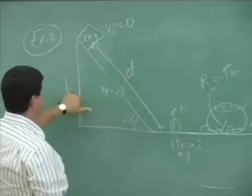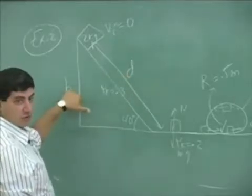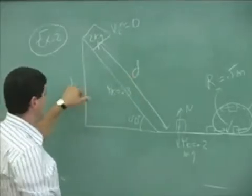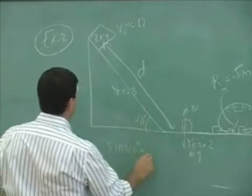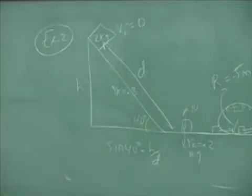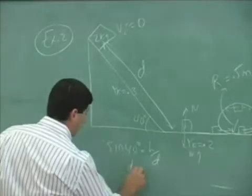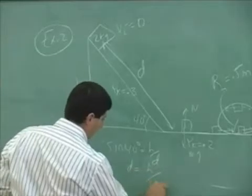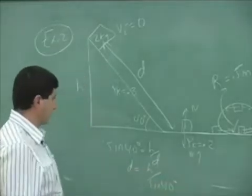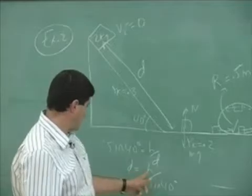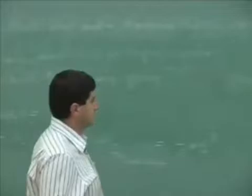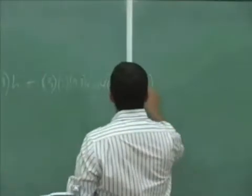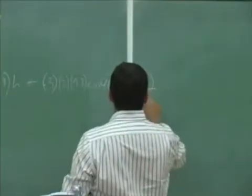We could express the distance in terms of the height h, right? We could say sine of 40 is h over d, and d equals h over sine of 40. So that's basically it, h over sine of 40. So I do need to put here h divided by sine of 40.